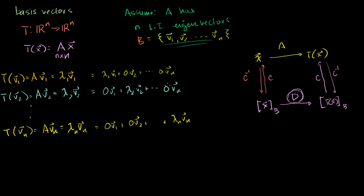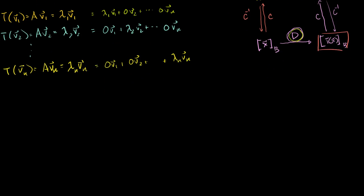So let's see that this will actually be a nice-looking, easy-to-compute-with, and actually diagonal matrix. The transformation of V1 in B coordinates is going to be equal to lambda 1 followed by a bunch of zeros — it's lambda 1 times V1 plus 0 times V2 plus 0 times V3 all the way to 0 times Vn. That's what it equals.